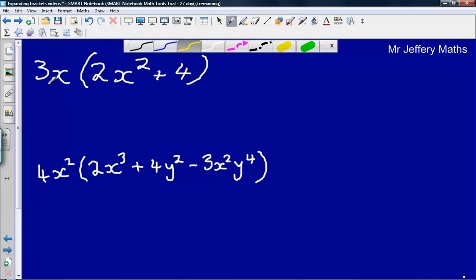So this first one, I've got 3x on the outside of the bracket and I'm multiplying that by the parts that are inside, so 2x squared plus 4. First of all, 3x multiplied by 2x squared. So we'll start with our numbers here, 3 multiplied by 2 gives us 6. Then we've got x multiplied by x squared, that leaves us with x cubed.